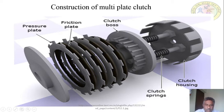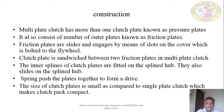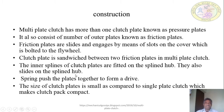When the plates are held together, the clutch is said to be in the engaged position. When they are separated, the clutch is in the disengaged condition. In the construction, the multi-plate clutch has more than one clutch plate. It also consists of a number of outer plates known as friction plates. The friction plates engage by means of slots on the cover bolted to the flywheel. The clutch plate is sandwiched between two friction plates. The inner splines of the clutch plate are fitted on the splines of the hub, and the plates are free to slide on the splined hub. Springs push the plates together to form a drive. The clutch plates are small and compact compared to a single plate clutch.